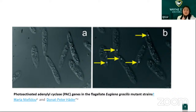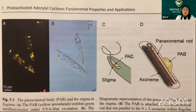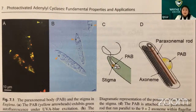This PAC gene was found in 2004. A funny fact is that after shining with UVA light, there are some spots that show autofluorescence. It's shown here — we can see from this photo in the book that this spot is where the photoreceptor is located.